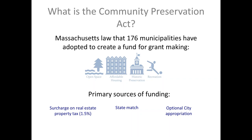This funding comes from a surcharge on the real estate property tax, which can be between 1.5% to 3%. In the city of Somerville, the surcharge is 1.5%. These funds are matched each year by the state, and we are a blended community, so the city can put in an optional additional appropriation of funds.